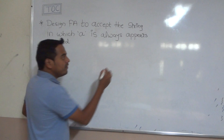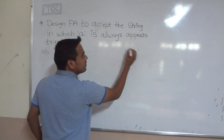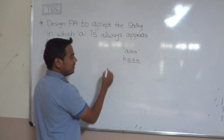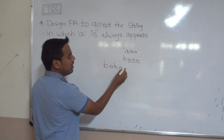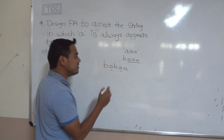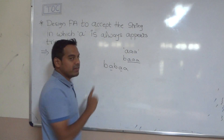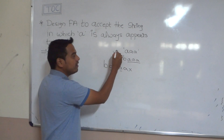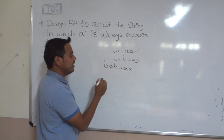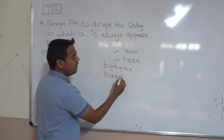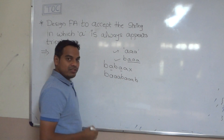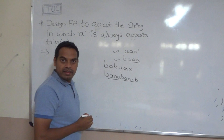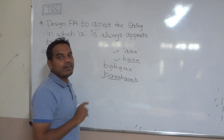Whenever A occurs, it must appear three consecutive times. For example, the string B-A-A-A is valid as it has three consecutive A's. But the string B-A-B-A-A is not allowed because three consecutive A's are not present. A string like B-A-A-A-B-A-A-A-B is accepted by the finite automata because A appears in groups of three consecutive times.